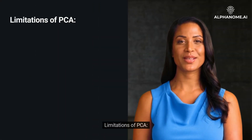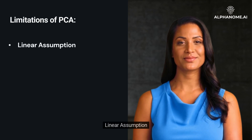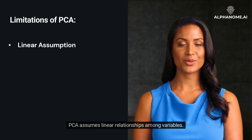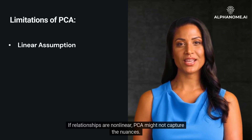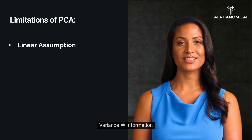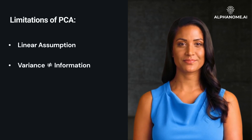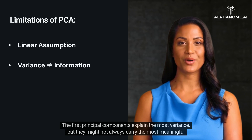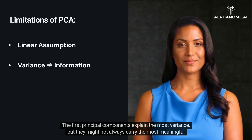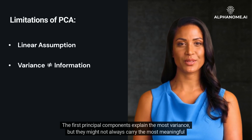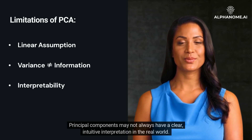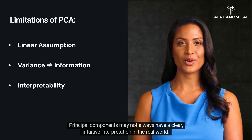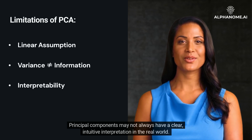Limitations of PCA: Linear Assumption — PCA assumes linear relationships among variables; if relationships are non-linear, PCA might not capture the nuances. Variance doesn't equal information — the first principal components explain the most variance, but they might not always carry the most meaningful information. Interpretability — principal components may not always have a clear, intuitive interpretation in the real world.